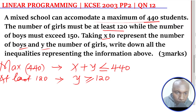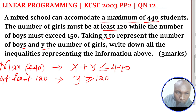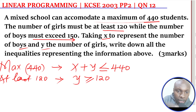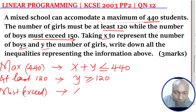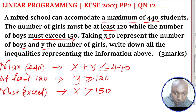Then the other statement: the boys must exceed 150. What do we mean by must exceed? Must exceed means it should be more than 150. Boys are X, so X should be greater than 150. That is simply how you form the three inequalities.